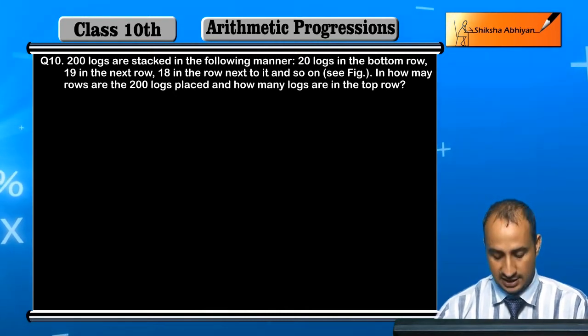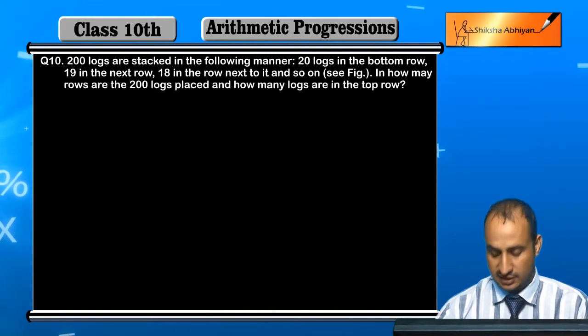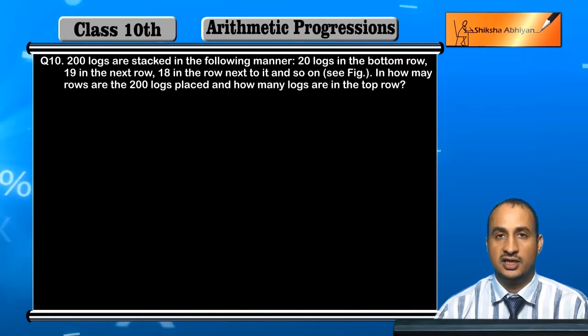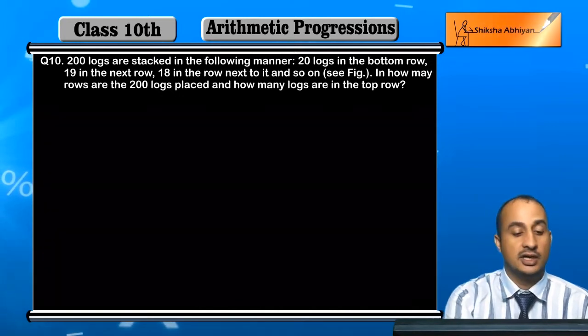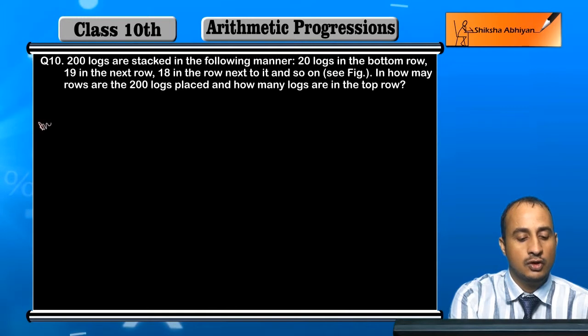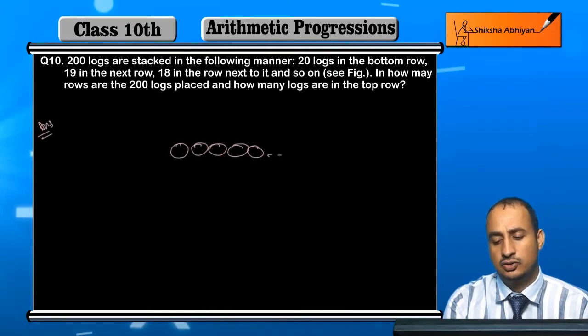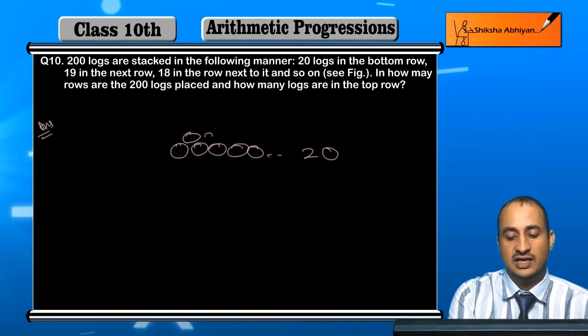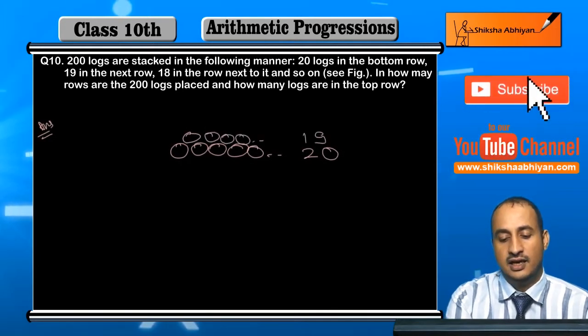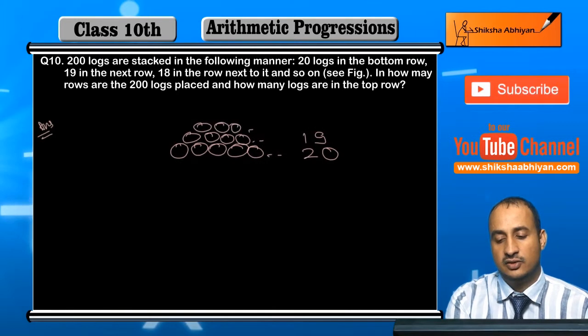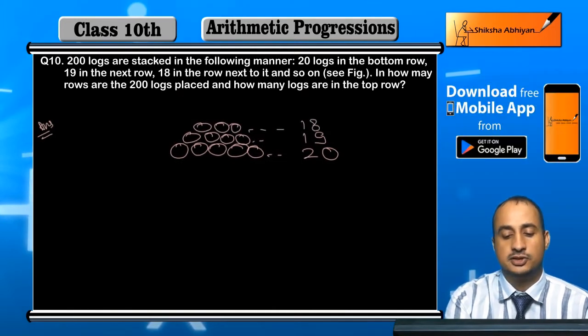And how many logs are in the top row? Let me explain how the logs are placed. First row has 20 logs, then next row has 19, then next row has 18, and so on.